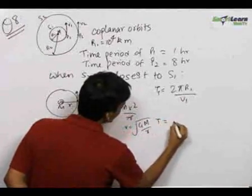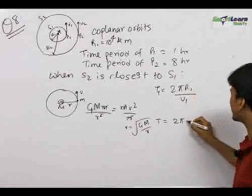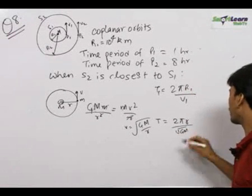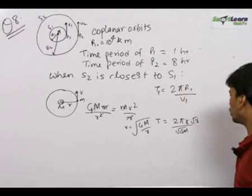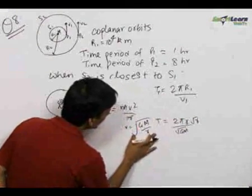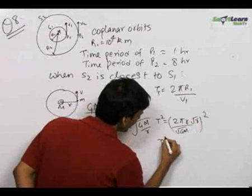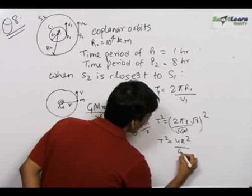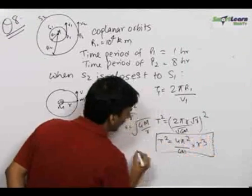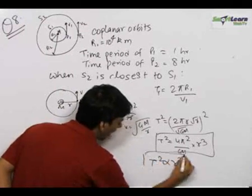Writing the time period T = 2πR/V and substituting V = √(GM/R), when we square both sides we get T² = (4π²/GM) × R³. From this relation, T² is directly proportional to R³. You should remember this result for satellites orbiting a particular planet or the sun.